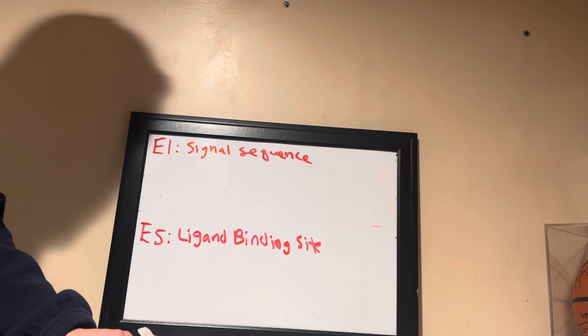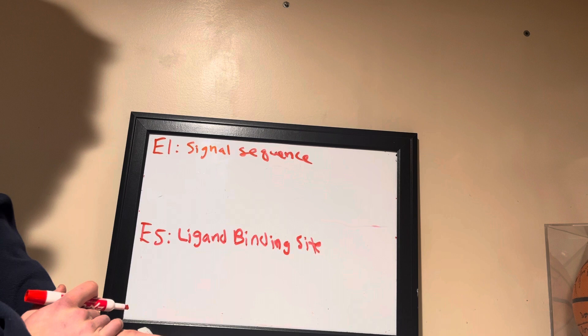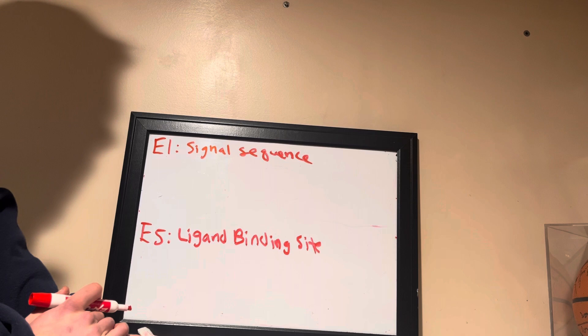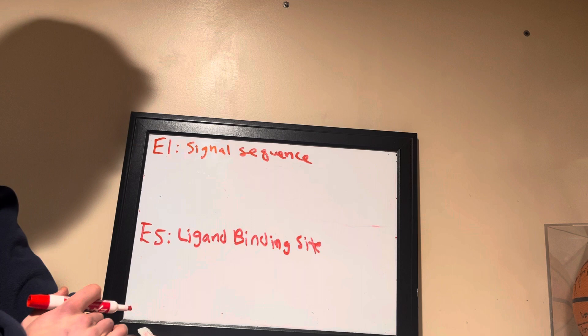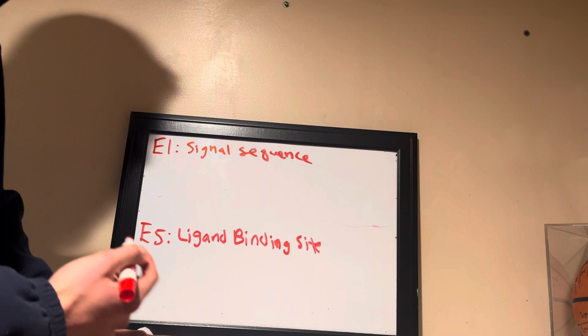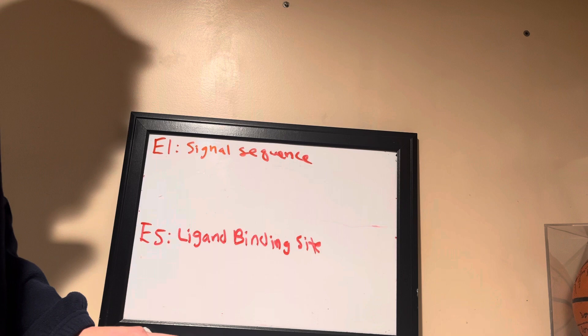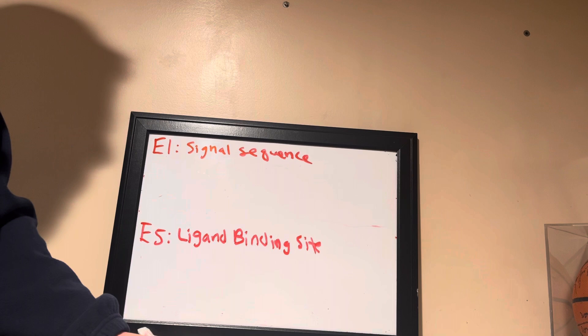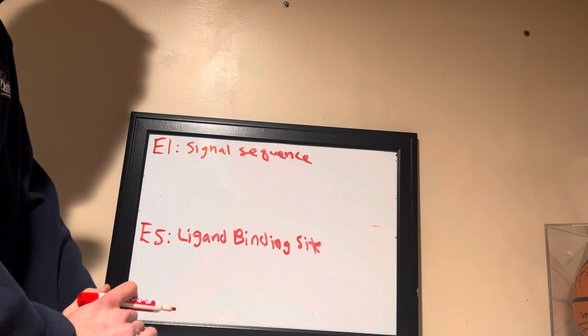An LDL receptor would most likely have an endoplasmic reticulum signal sequence, which means that the protein made by the LDL receptor gene will end up going to the endoplasmic reticulum, eventually being transported via transport vesicles to the plasma membrane, where the receptor will embed itself to carry out its function.